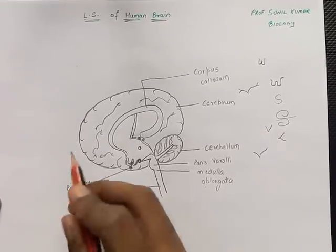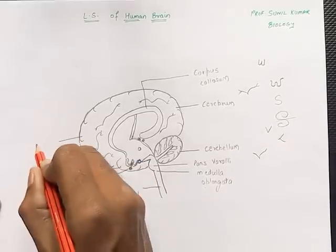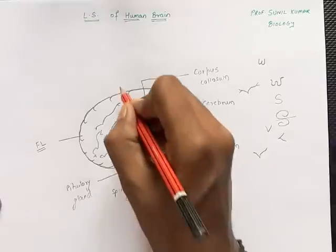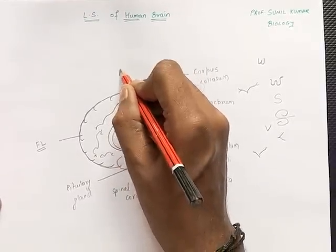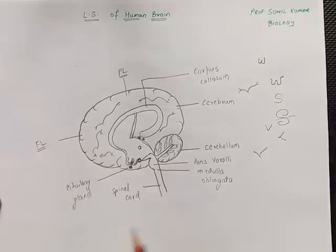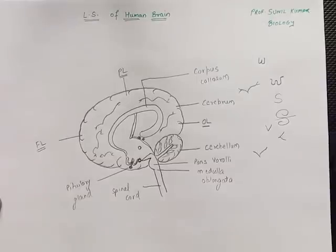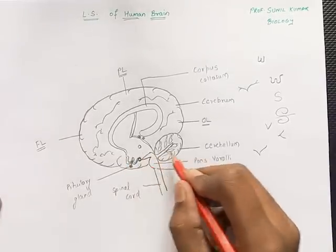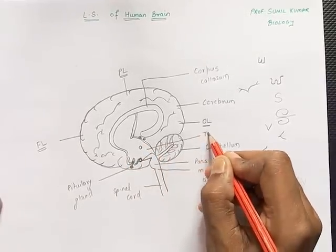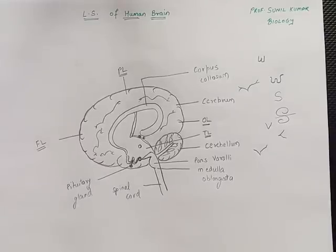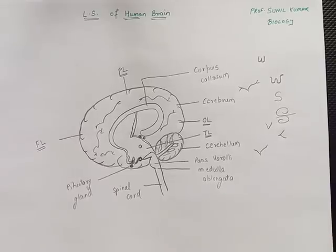For the various lobes of the brain: this is FL, the frontal lobe; the one facing the top is PL, the parietal lobe; the one behind is OL, the occipital lobe; and the one at the side is TL, the temporal lobe. This is how you can draw the brain in a simplified form. Please don't forget to subscribe to my channel — thank you very much.